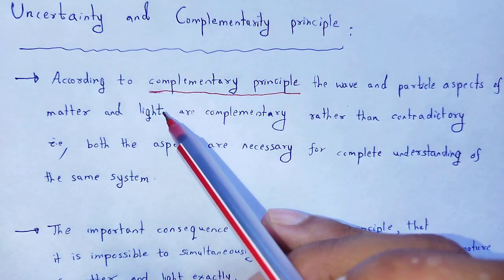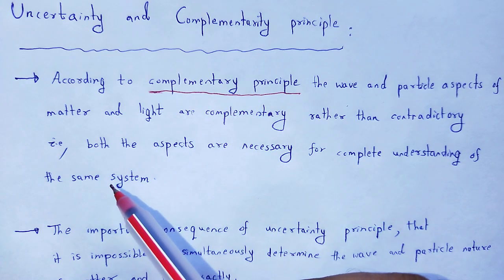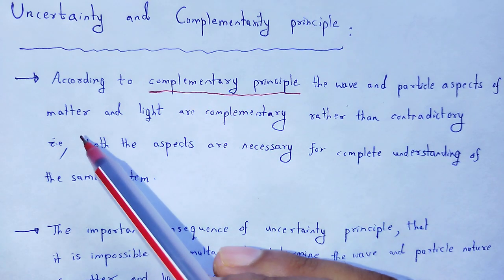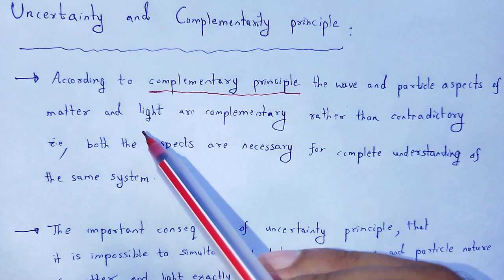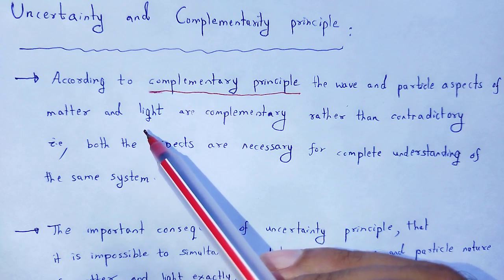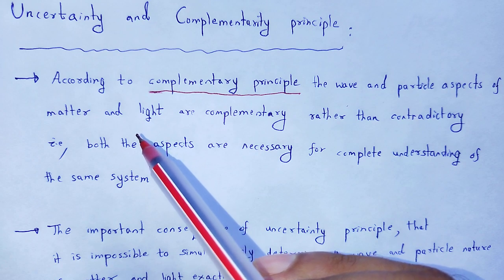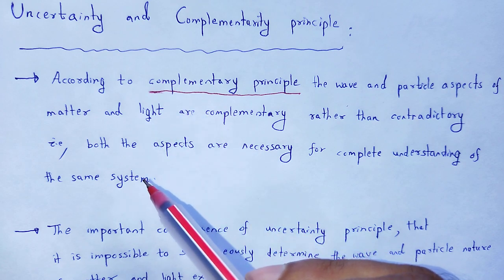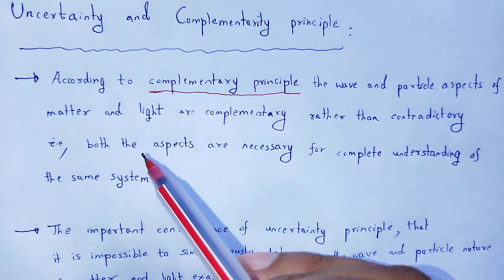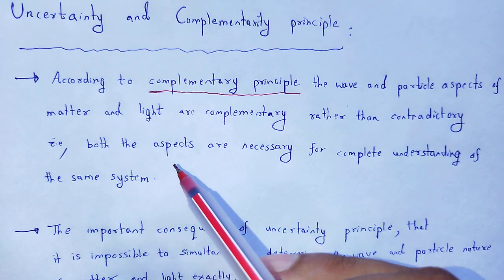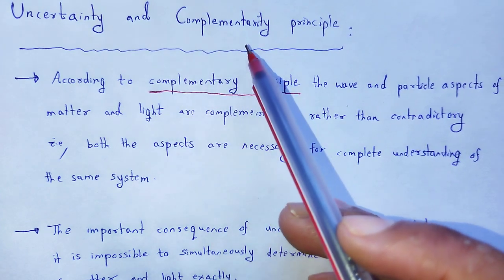If we consider light, again it shows wave as well as particle characteristics. These two aspects are complementary — one complements the other rather than being contradictory — which indicates these two aspects are necessary for complete understanding of a system. This is the Complementarity Principle.